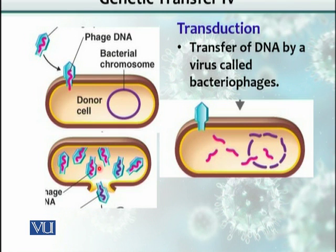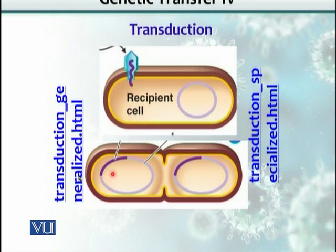As you can see, after the replication is over, this phage or virus has its own DNA which is pink. But one of these viruses has acquired bacterial DNA during replication. When this phage or virus infects another bacterium, it would transfer this bacterial DNA into that new bacterium.